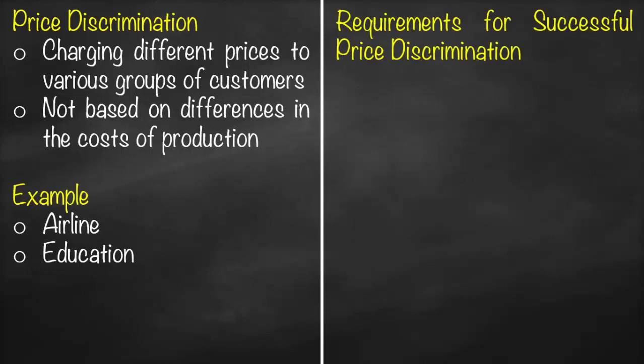So what are the major requirements for successful price discrimination? We have three conditions. The first one, you must have some market power which means you act as a monopoly, which means for monopoly you generate already an economic profit where price is bigger than average total cost.